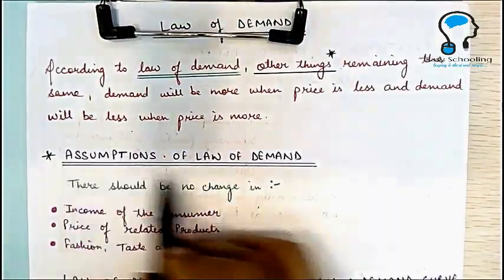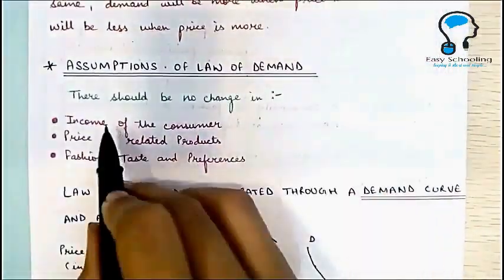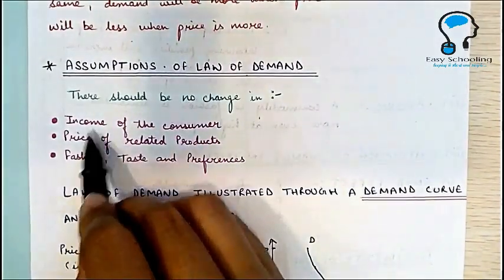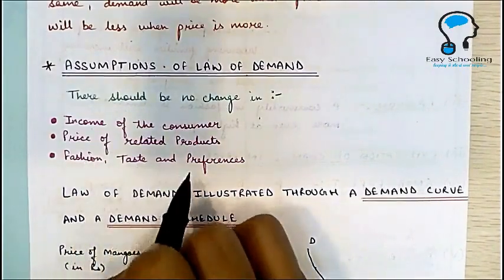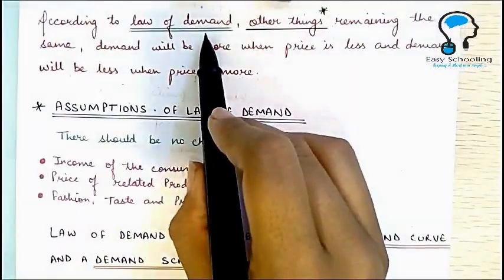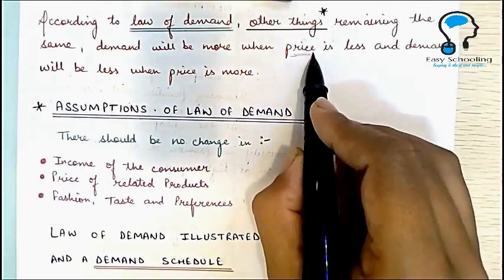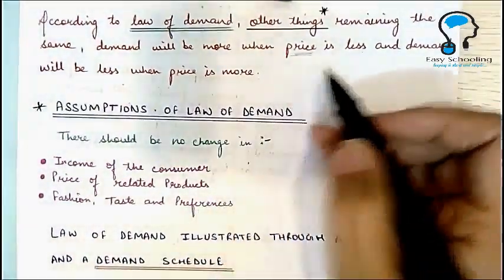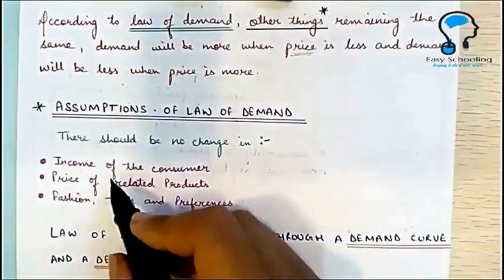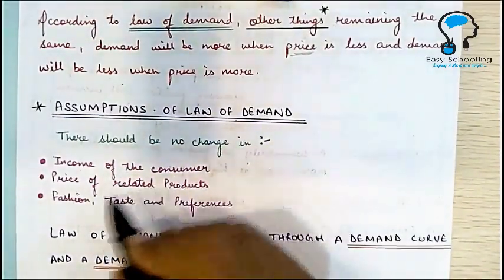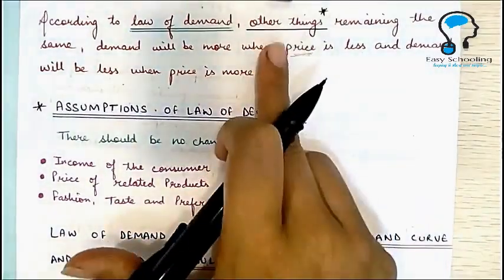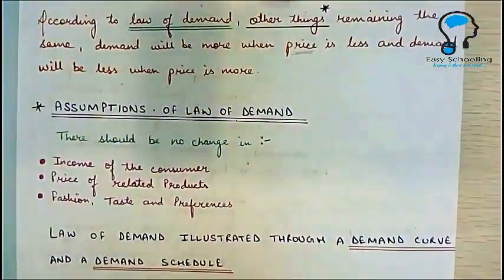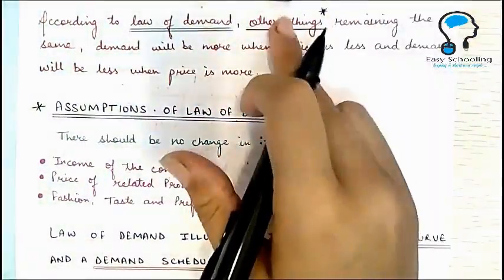Now, what are these 'other things'? They are called the assumptions of the Law of Demand. There are three assumptions: there should be no change in income of the consumer, price of related goods, and fashion, tastes and preferences. The Law of Demand refers to change in demand only because of the price of the commodity — not because of the other three factors.